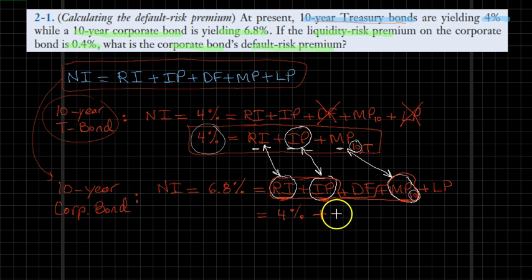Now, I still have two more variables. I still have to figure the default risk premium, but guess what? The liquidity premium is provided in the problem. It's 0.4% for that company. So 0.4% it is. And we're pretty much done.